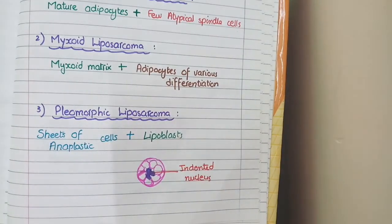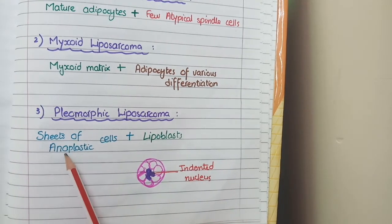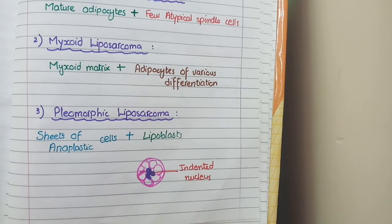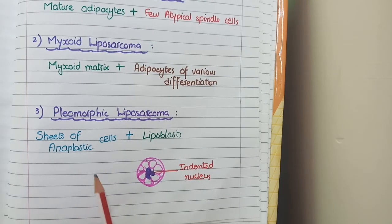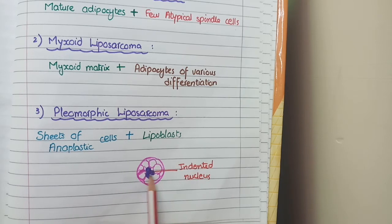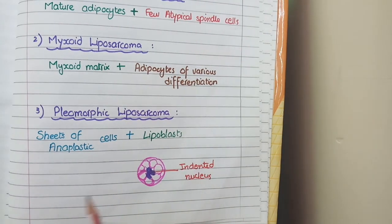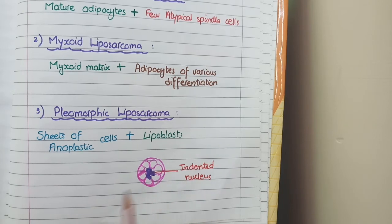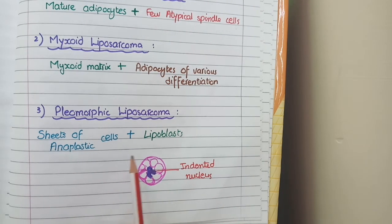The third histopathological subtype is pleomorphic liposarcoma. Pleomorphism means change in shape and size of cells, so in pleomorphic liposarcoma you see undifferentiated or anaplastic cells arranged in sheets. One among these undifferentiated cells is the lipoblast, which is an immature variant of the lipocyte or adipocyte. The lipoblast is visible as a large cell with multiple empty large-sized vacuoles, and these vacuoles cause indentation or scalloping of the central nucleus. This is different from a mature adipocyte, where the nucleus is pushed to the margins — in the lipoblast, the nucleus becomes indented and remains in the central position.